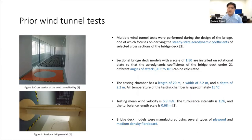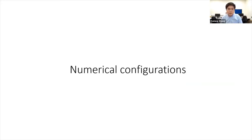The bridge model is made of plywood and medium density fiberboard and has a scale of 1:50. The testing chamber has a length of 20 meters and a 2.2 by 2.2 meter cross section. The testing velocity is 5.9 meters per second with a turbulence intensity of 15% and a turbulence length scale of 0.68 meters, and the testing chamber has a temperature of around 15 degrees Celsius. Based on this background, we replicated the wind tunnel test in CFD simulations using OpenFOAM.